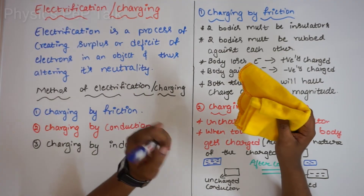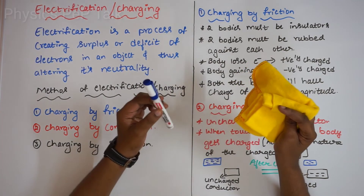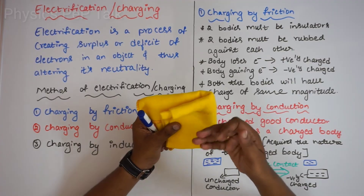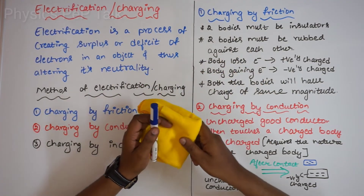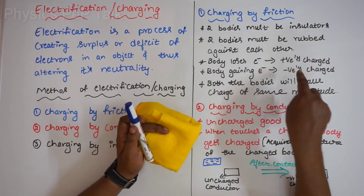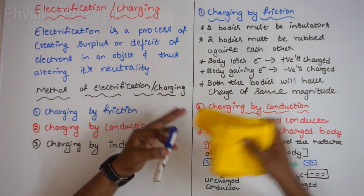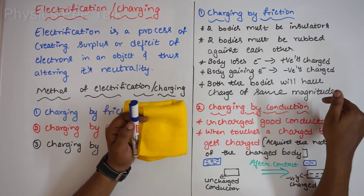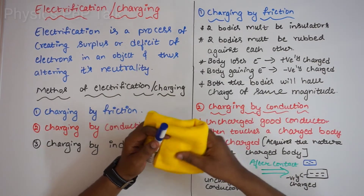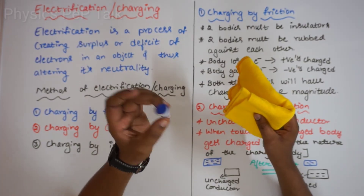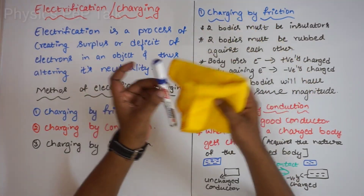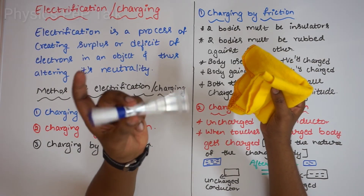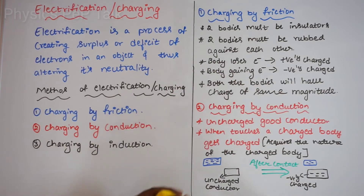Electrons from the glass rod get transferred onto the silk cloth. As a result, the glass rod becomes positively charged and the silk cloth becomes negatively charged. Bodies which lose electrons get positively charged, and bodies which gain electrons get negatively charged. Both bodies will have the same charge of the same magnitude but opposite sign. For example, if the glass rod gets charged by plus one coulomb, the silk cloth gets charged by minus one coulomb.